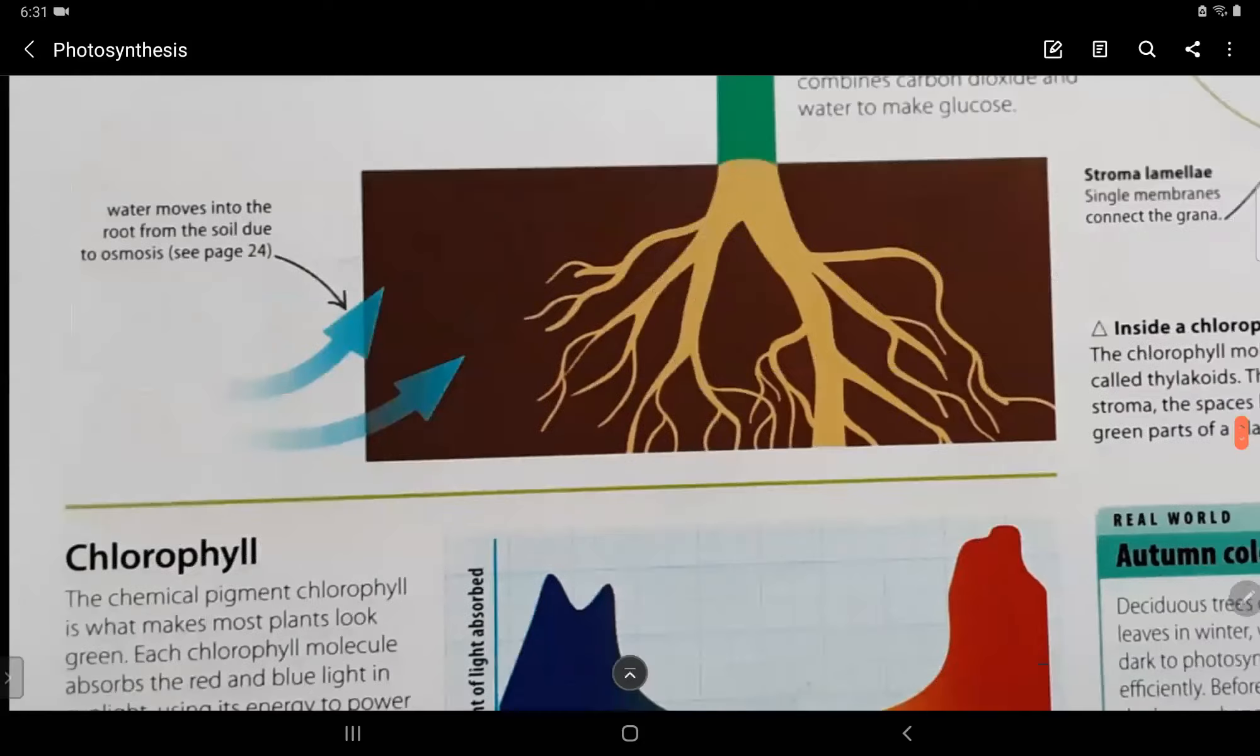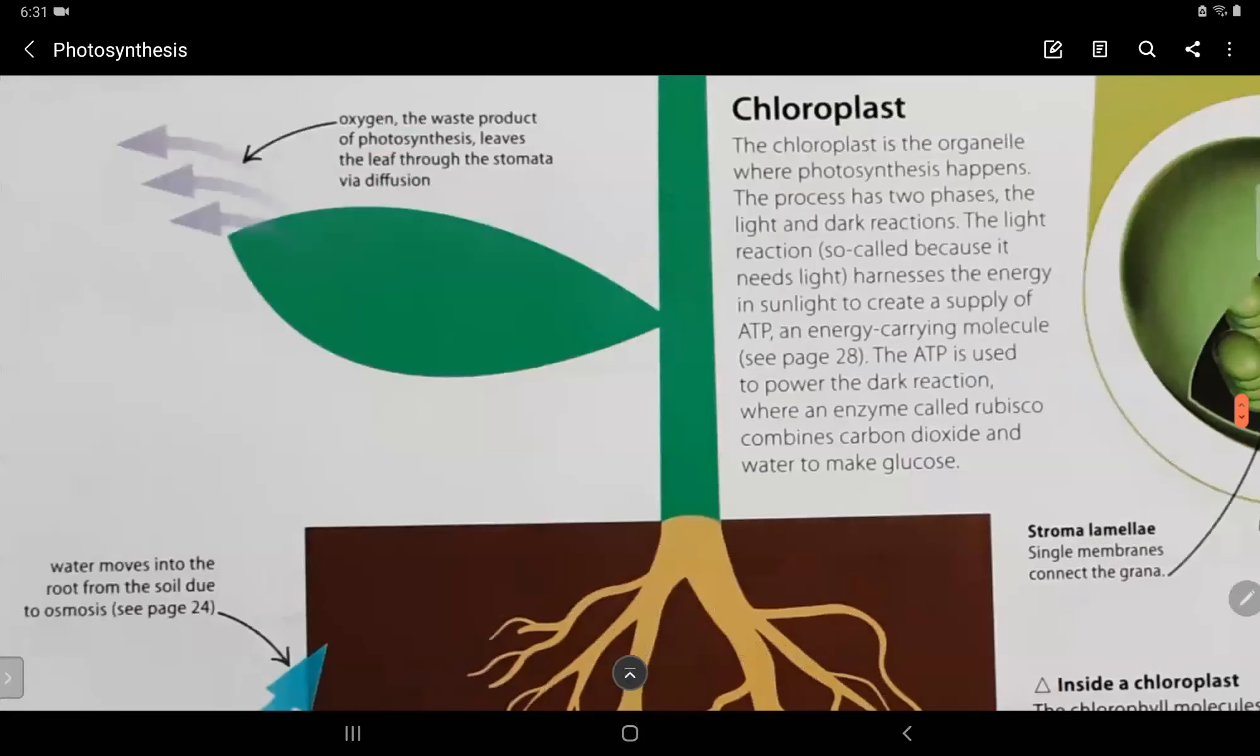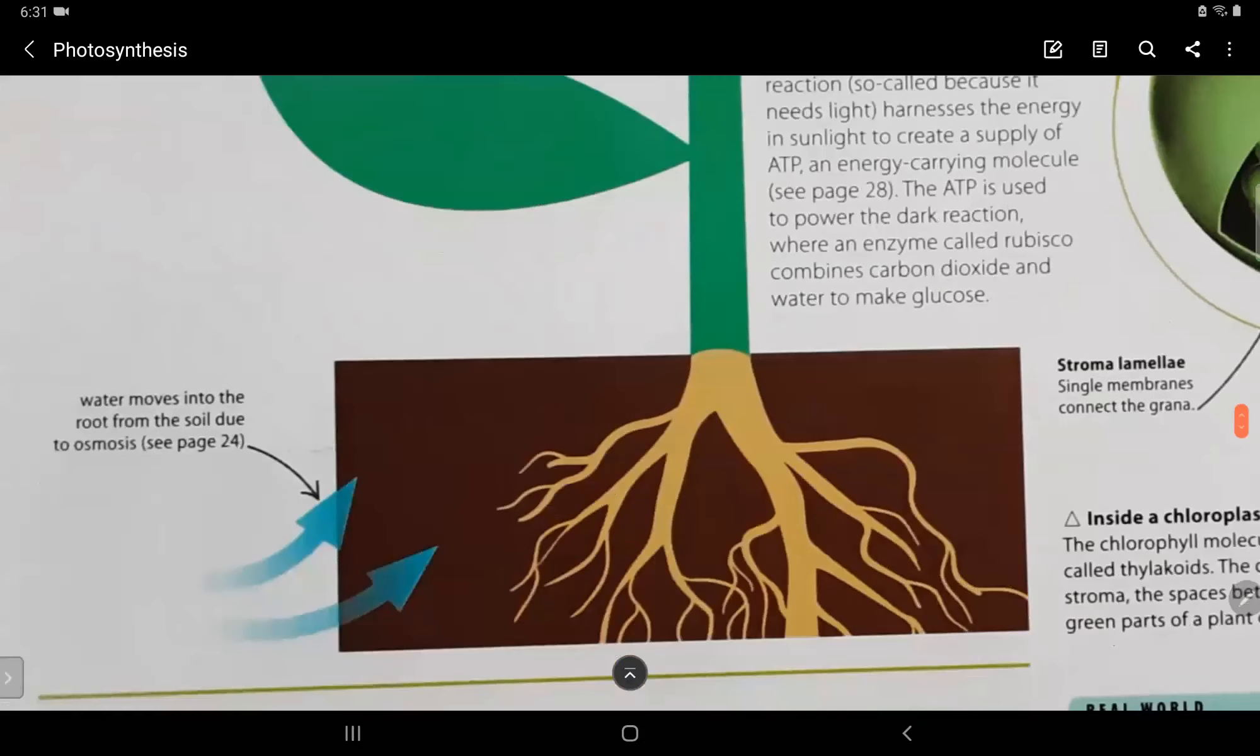So, what we see is the green light that is not used by photosynthesis reflected back. So, this is what a root is. Now, here water moves into the root from the soil due to osmosis.